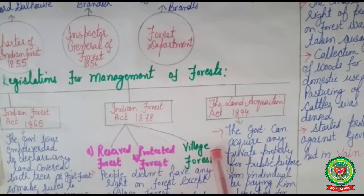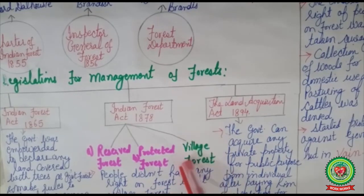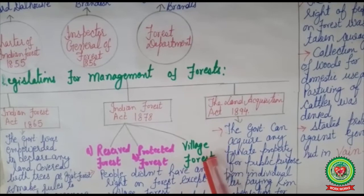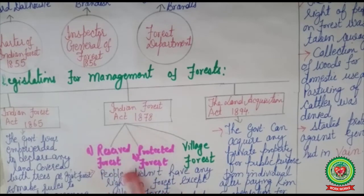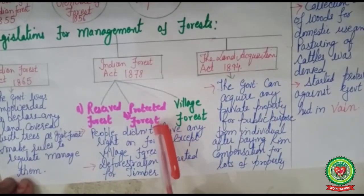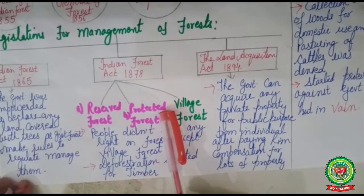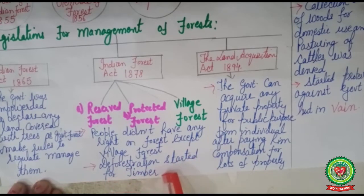The Indian Forest Act of 1878 categorized forests into three different categories: Reserved Forest, Protected Forest, and Village Forest. People had rights only over Village Forest; the first two — Reserved Forest and Protected Forest — were under British authority. Because Reserved Forest and Protected Forest were under British authority, deforestation and cutting of trees started there, especially for selling timber.